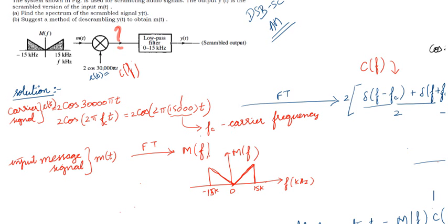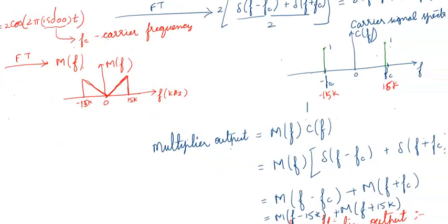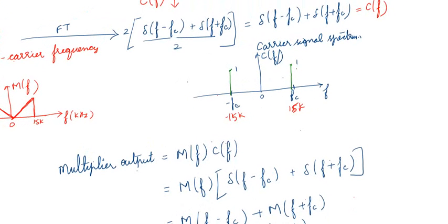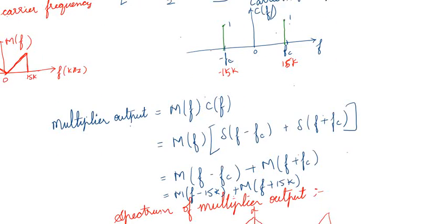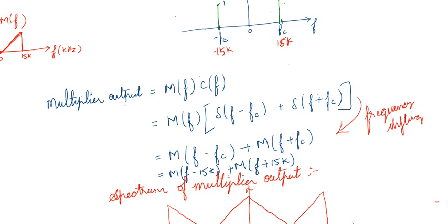The output of the multiplier is the product of the message spectrum m(f) and the carrier spectrum c(f). So the multiplier output = m(f) · [δ(f - f_c) + δ(f + f_c)]. By applying the frequency shifting property, m(f) multiplied with δ(f - f_c) gives m(f - f_c), and m(f) multiplied with δ(f + f_c) gives m(f + f_c).